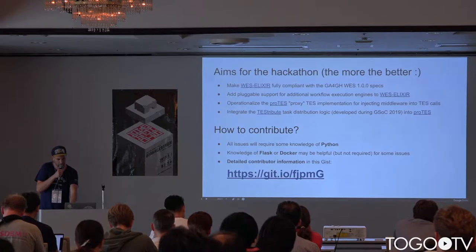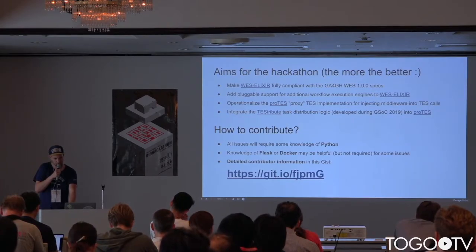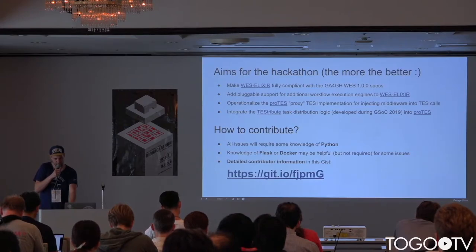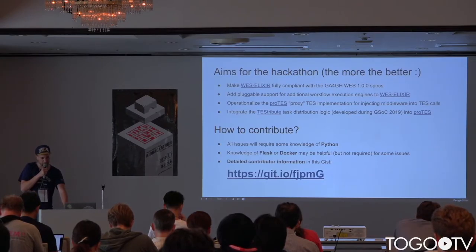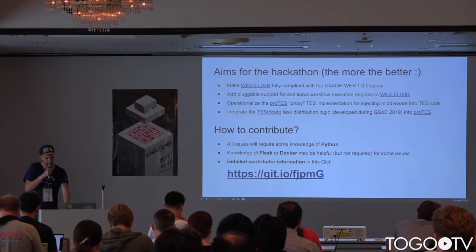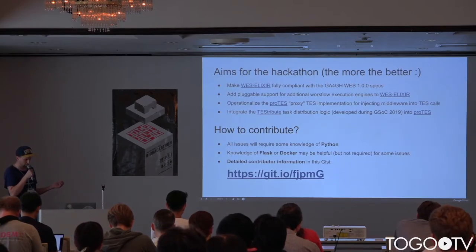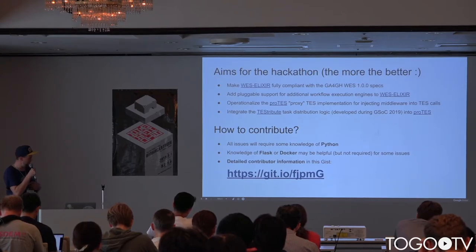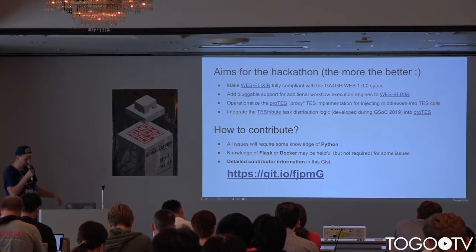The aims of the hackathon are: making WES Elixir fully compliant with the specs, adding pluggable support for additional workflow execution engines, operationalizing the proxy TES implementation for injecting middleware, and integrating the TES distribution logic recently developed during Google Summer of Code into proxy TES. To contribute, it's good if you have knowledge of Python since everything is written in Python. I've written detailed instructions on a gist available at the URL shown.